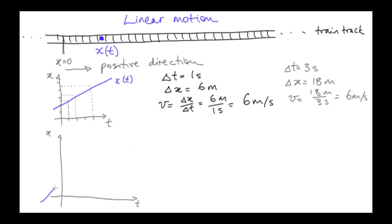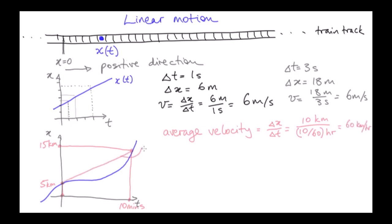Now let's look at a graph of x that is not a straight line. We see from this graph that the train travels 10 kilometres in a 10-minute interval, and we can calculate the average velocity for this trip as 60 kilometres per hour. This is the slope of the line that joins the point at x for time equals zero to x at time equals 10 minutes.